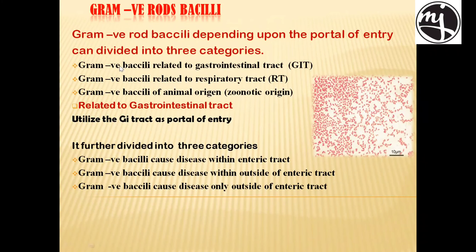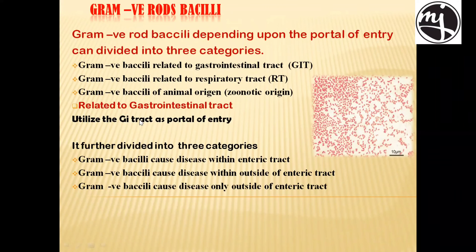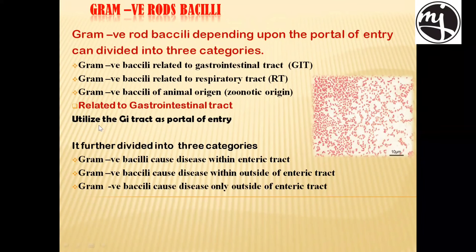Gram-negative bacilli are classified by portal of entry: first, gram-negative bacilli using the gastrointestinal tract as a portal of entry; second, gram-negative bacilli using the respiratory tract as a portal of entry; third, gram-negative bacilli of animal origin. The GIT-related group is further divided into 3 categories.